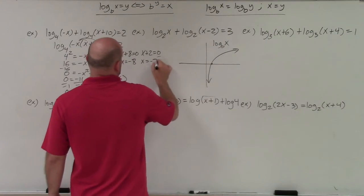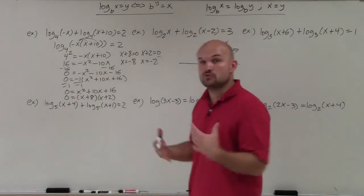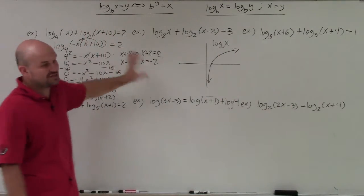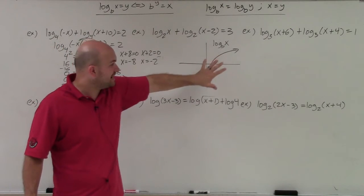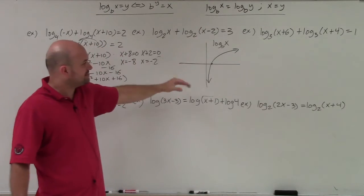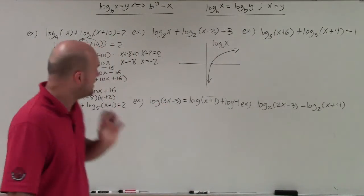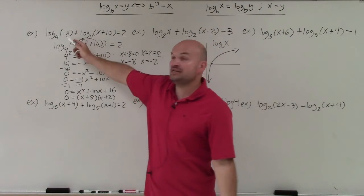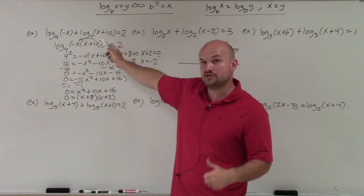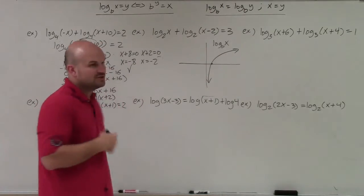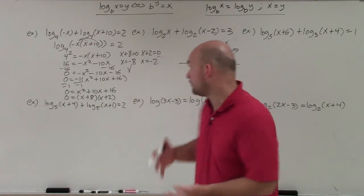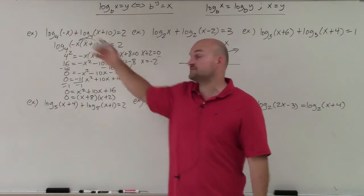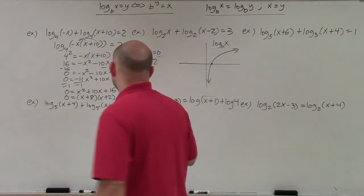Going back to what I described about extraneous solutions — I need to check that my solutions work. Just because the answers are negative doesn't mean they're extraneous, because this graph has transformations shifting left, right, up and down. When I plug negative 8 in: negative x gives positive 8, and for the other logarithm, negative 8 plus 10 gives positive 2. Both work. When I plug negative 2 in: negative x gives positive 2, and negative 2 plus 10 gives positive 8. Both solutions check out.